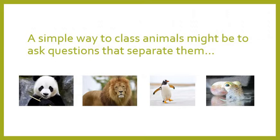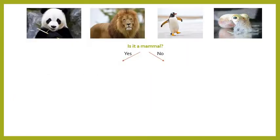A simple way to classify animals is to ask simple questions that separate them into different groups. What I've got here is a panda, a lion, a penguin, and a squid, and we're going to have a go at asking questions that will split them up into classes.